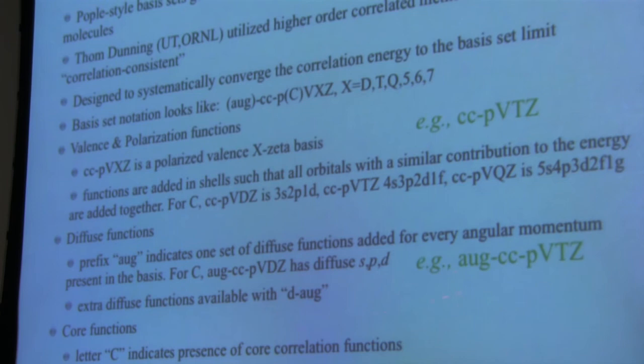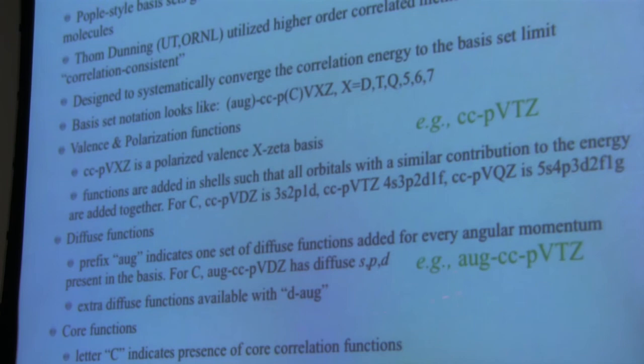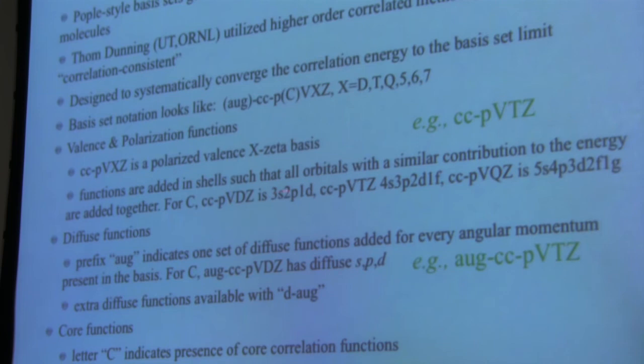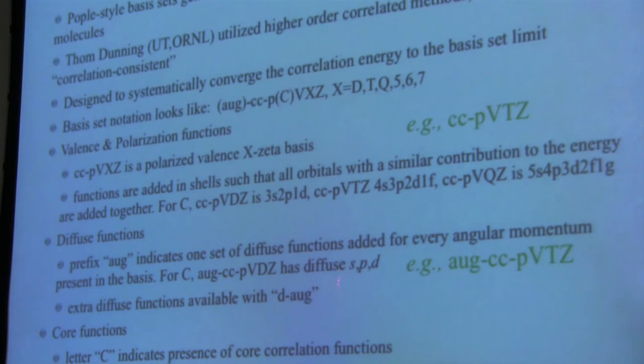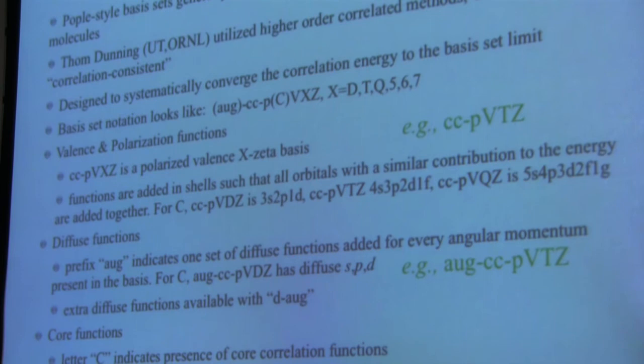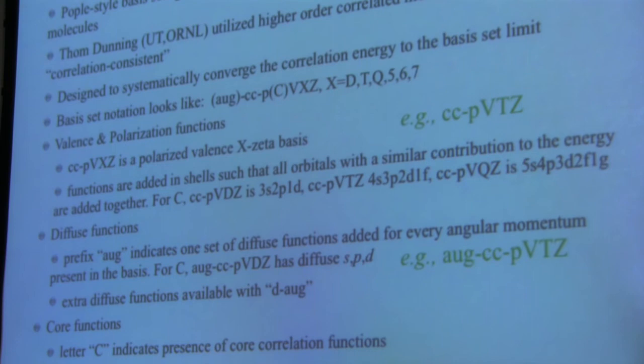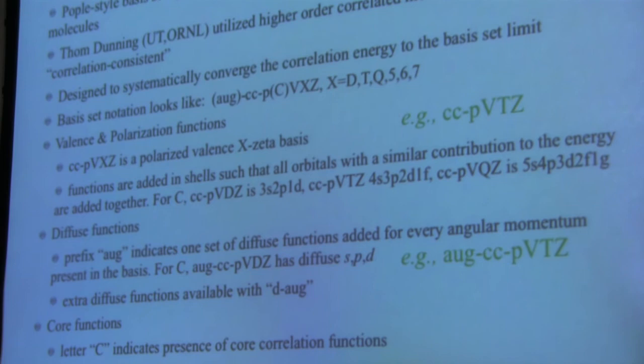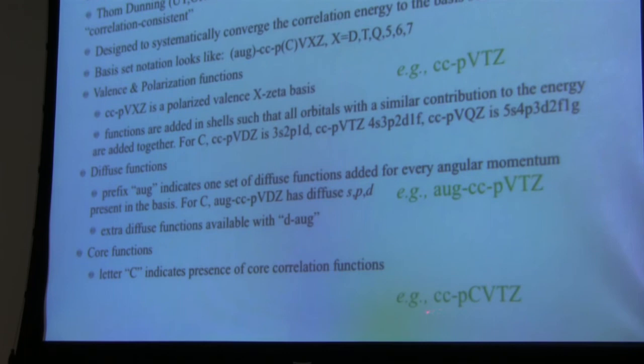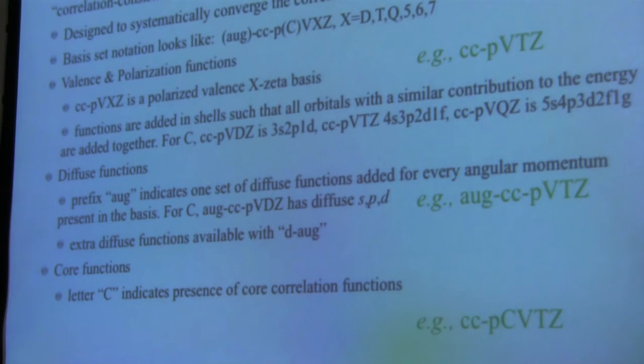Diffuse functions for every angular momentum present are indicated by 'aug' in front — for example aug-cc-pVDZ. For carbon in cc-pVDZ, the aug version adds diffuse s, p, and d orbitals. Extra diffuse functions are available with double-aug, triple-aug, and so forth. If you want to incorporate core-orbital correlation, there are basis sets with an extra capital C that include core correlation functions.